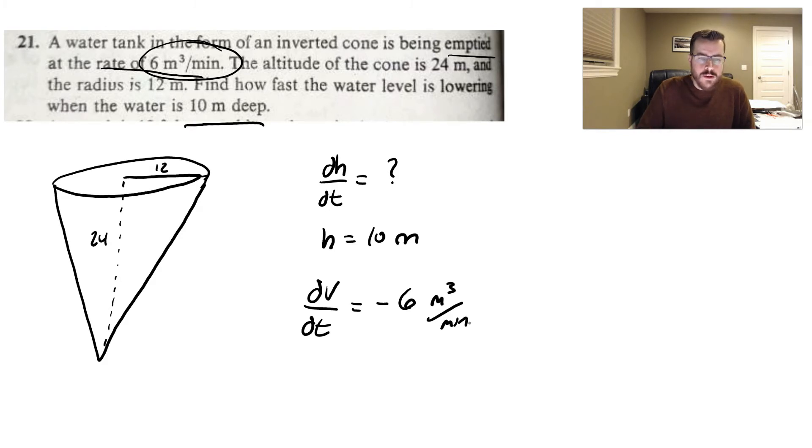So what do we know about a cone? Well, we know the volume of a cone is equal to pi r squared h, but it's a third of that. V = (1/3)πr²h.